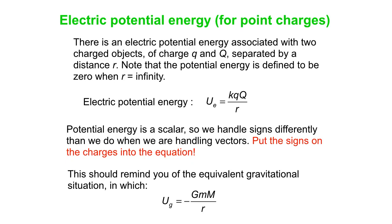Now note that negative potential energy is indicative of an attractive interaction. Positive is indicative of repulsive interaction. And that is all for our introduction to electric potential energy.